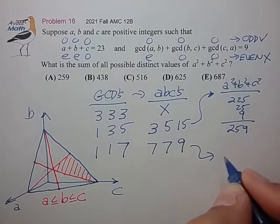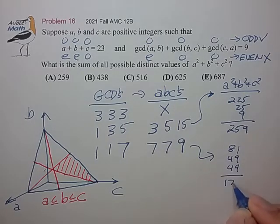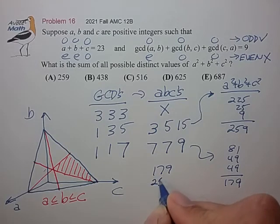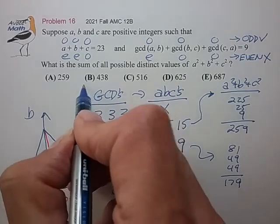In the second case, 81, 49, 49, 179. The grand sum, 438 for choice B.